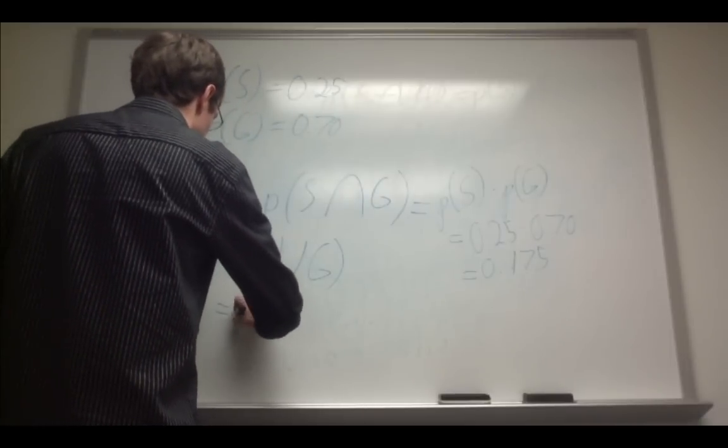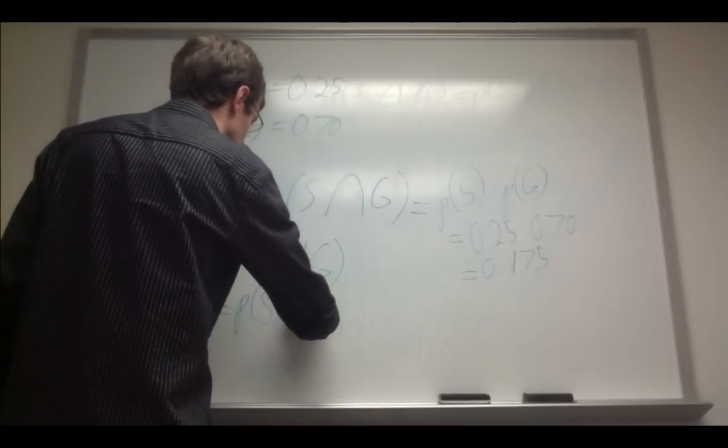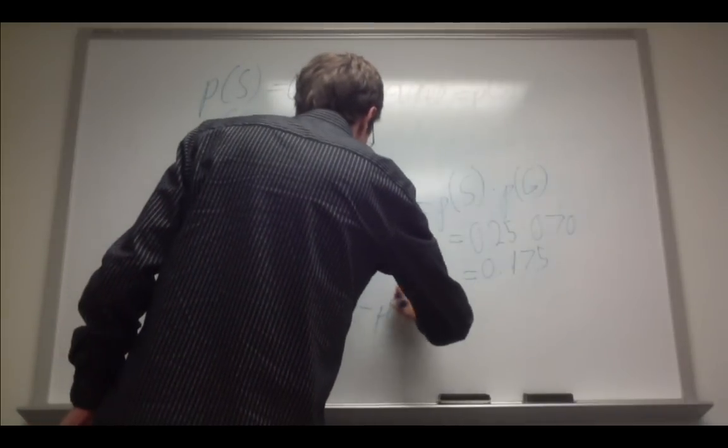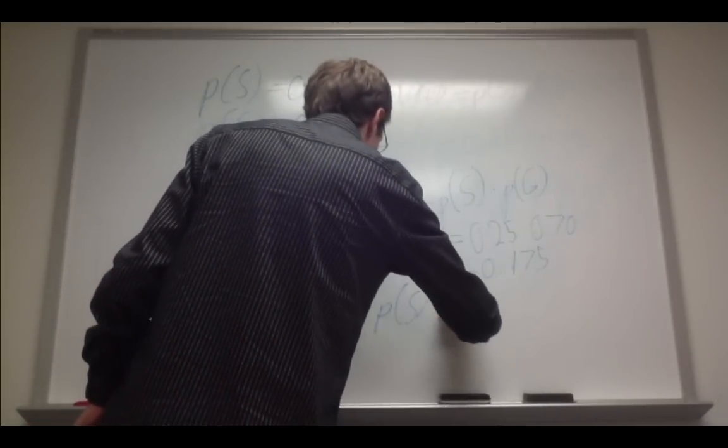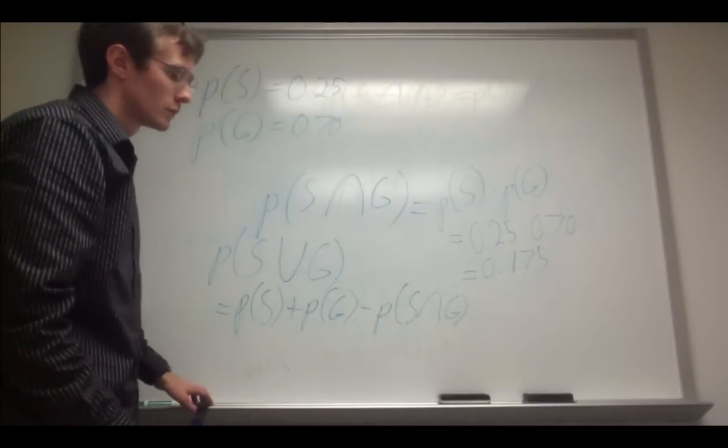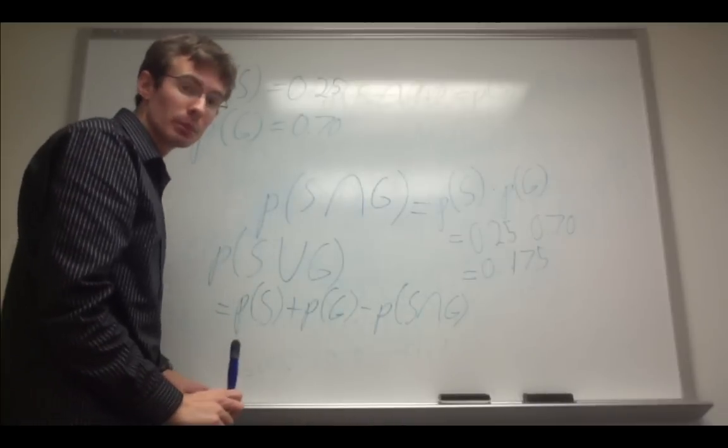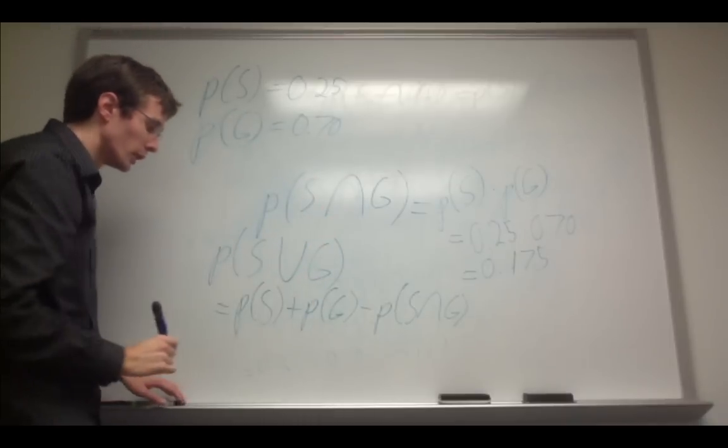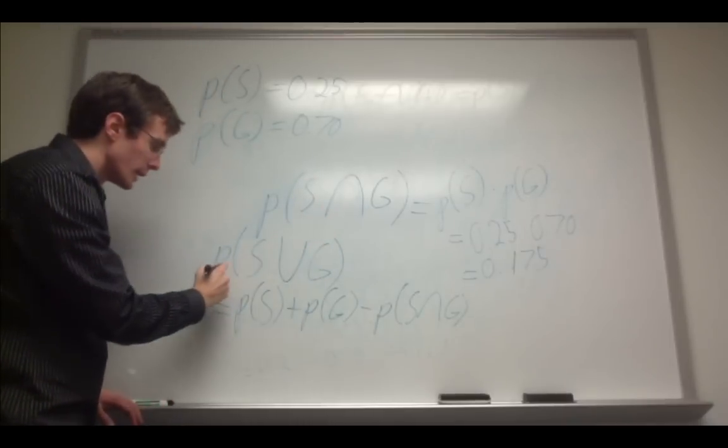So, this is going to be P of S plus P of G minus their intersection, which we calculated in the previous step. So, once we have those, we can just substitute those numbers into this formula to obtain this probability right here. 0.25 plus 0.7, and then we subtract 0.175, which equals 0.775.